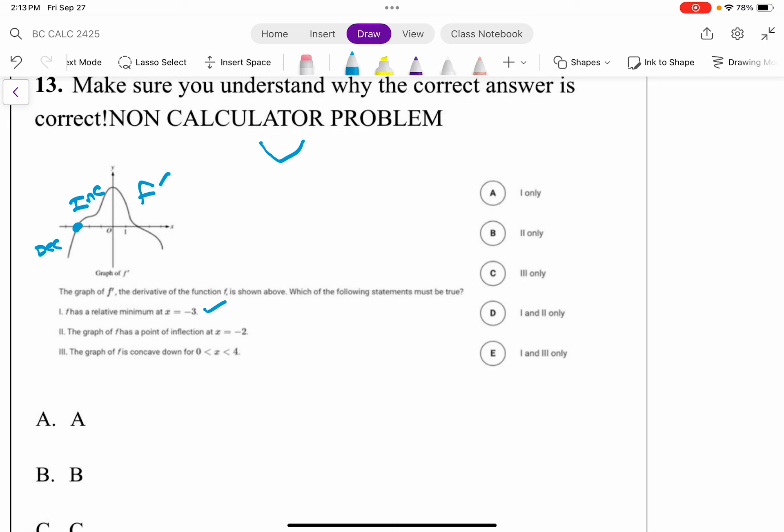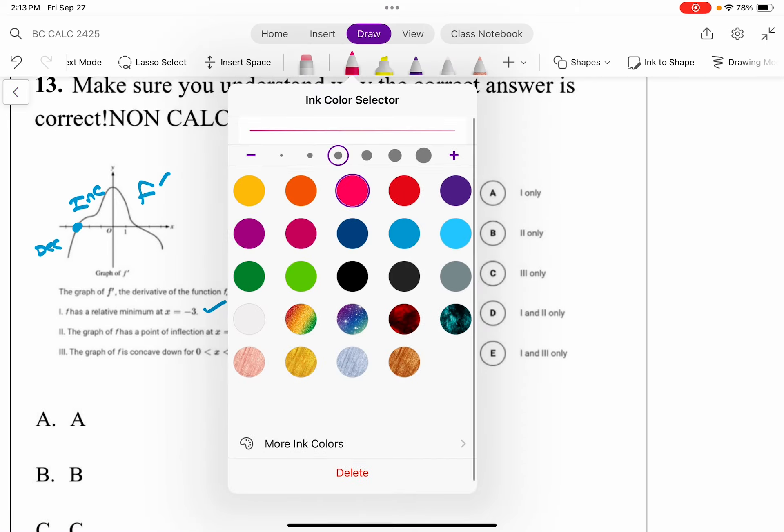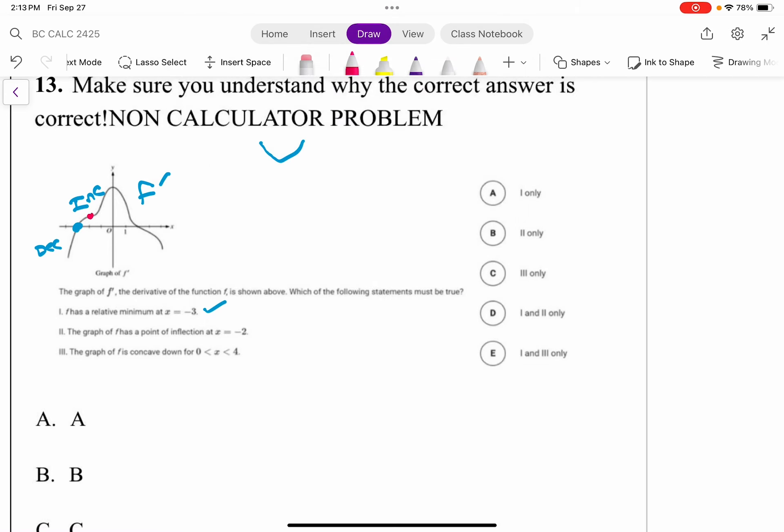The graph of f has an inflection point at x equals negative 2. Well, at negative 2, that's this point right here. So, read this carefully. The graph of f has an inflection point at x equals negative 2. No.